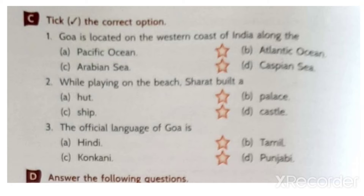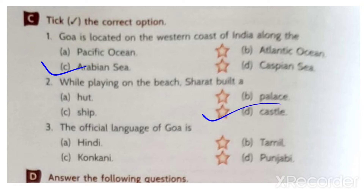Goa is located on the western coast of India along the Arabian Sea - this is correct. While playing on the beach, Sharath built a castle. The official language of Goa is Konkani. Now moving to the next slide.